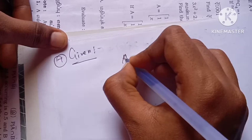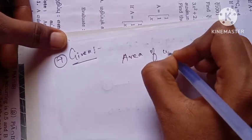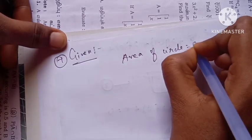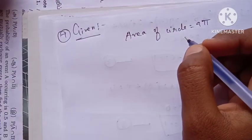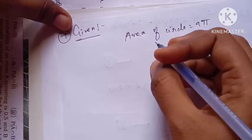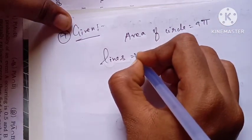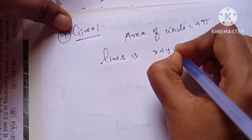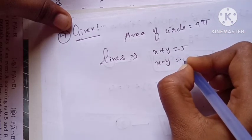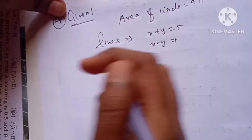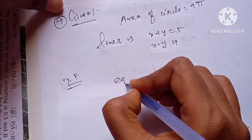Given: the area of the circle is 9π. The two diameters lie along the lines x plus y equals 5 and x minus y equals 1. We need to find the equation of the circle.